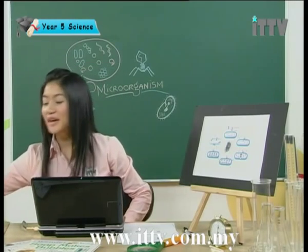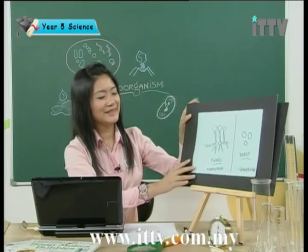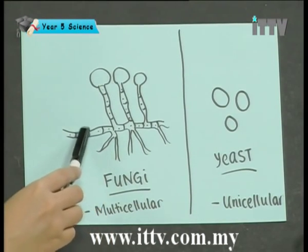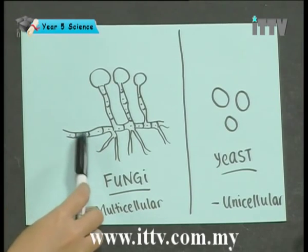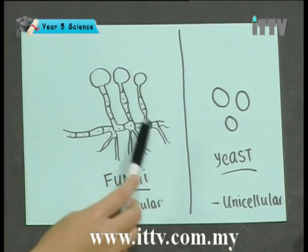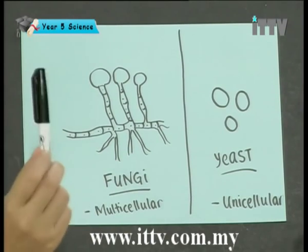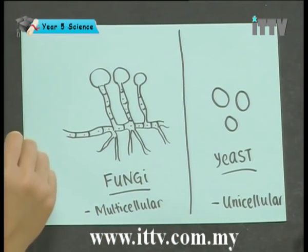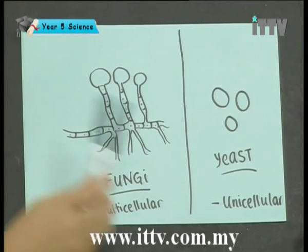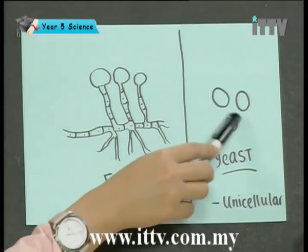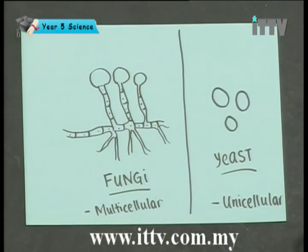I have a diagram here for you. The fungi look like this — can you see that they are divided into many different cells? So fungi are multicellular; they are made up of more than one cell. Yeast is also a type of fungi, but yeast is unicellular because it is made up of just one cell. These are different individual yeast cells — remember that.